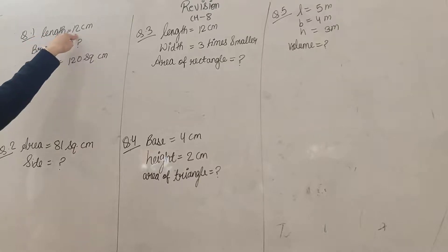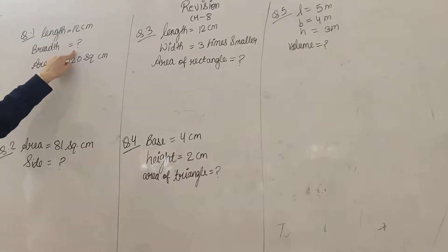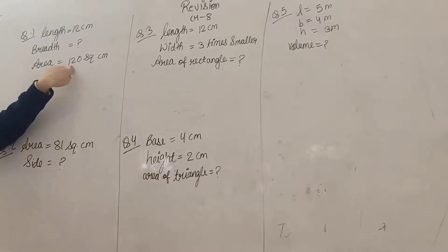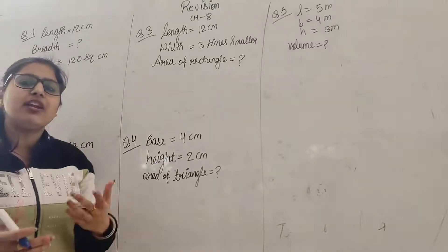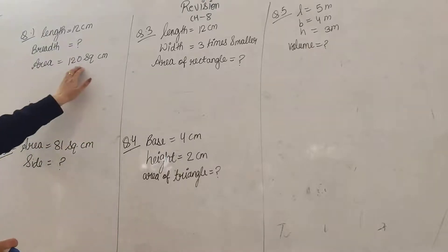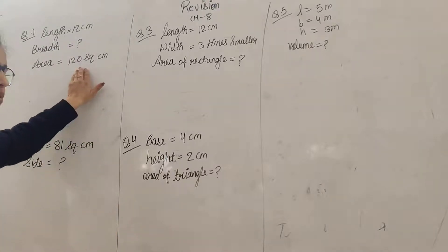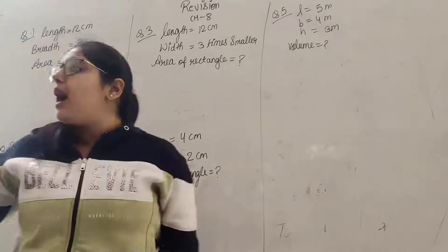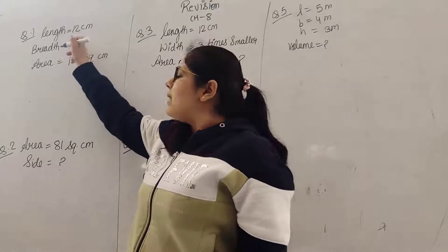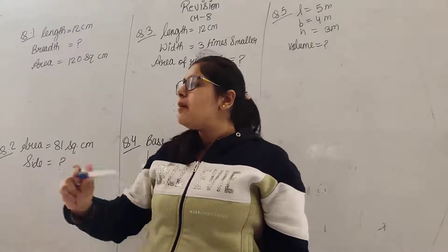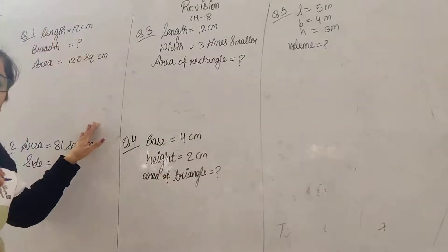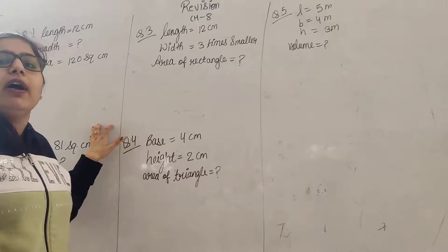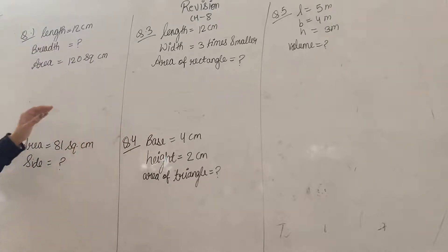Length is 12 cm, breadth हमें find करनी है and the given area is 120 cm². जब area of rectangle या area of square mention नहीं है, तो आप कैसे पता लगाओगी कि ये area of rectangle है या area of square? अगर length और breadth है, तो इसका मतलब हम बात कर रहे हैं rectangle की. तो यहाँ पर length और breadth दी हुई है, तो हमें साफ पता लग रहा है कि हम area of rectangle की बात कर रहे हैं.